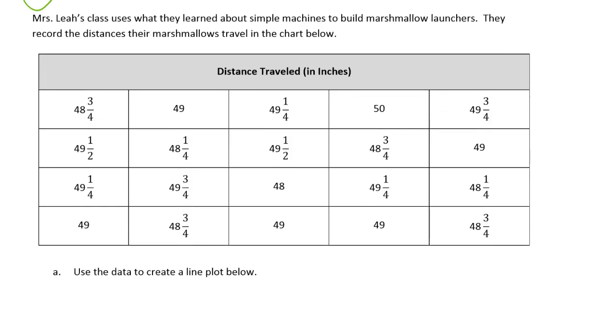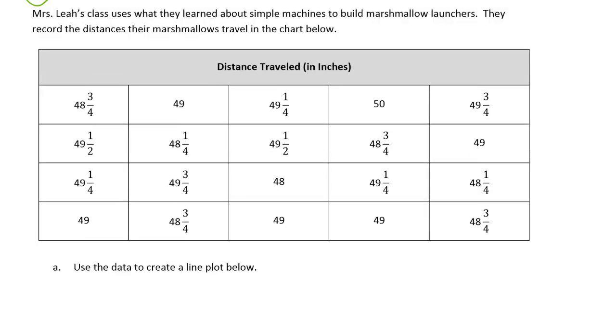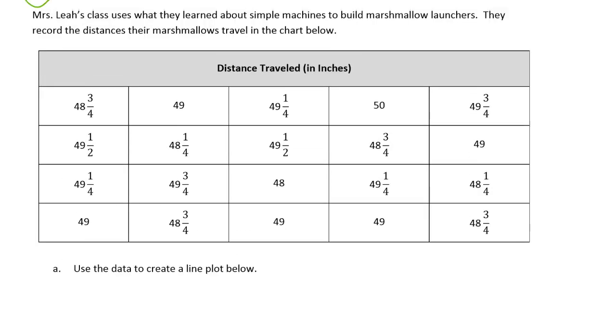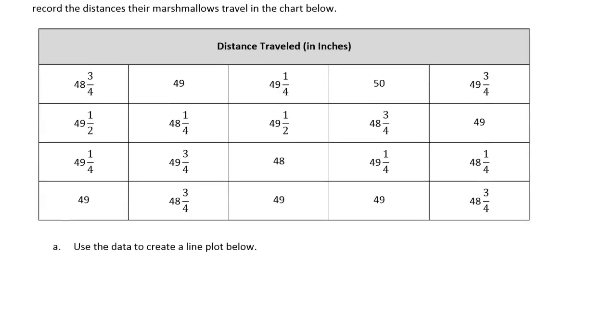For Lesson 7, we had the line and the measurements drawn for us and we just had to put in the X's and count. But here we have to draw our line and we have to figure out how to label the line and get all that stuff in there. There's kind of a little more to do, but it's still basically counting everything. So what's our smallest measurement and what's our largest measurement? That's going to tell us what the range is that we're going to need for our line plot.